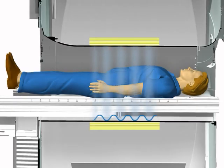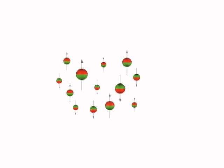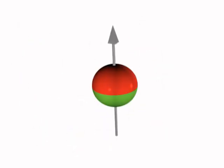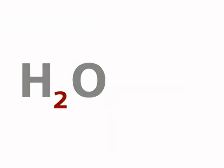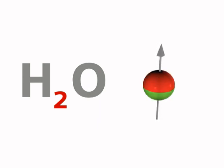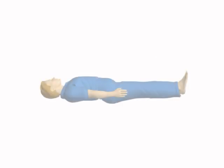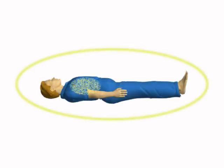MRI uses a magnetic field to orient the position of certain nuclei in the body. The primary nuclei used for MRI imaging is in the hydrogen atom, called a proton. The body is made up of approximately 75% water. Water is two parts hydrogen, making the nucleus of the hydrogen atom — the proton — the most abundant in the human body. A radio wave is then used to excite the proton, which resonates and emits varying signals, which are received, digitized, and displayed as images.